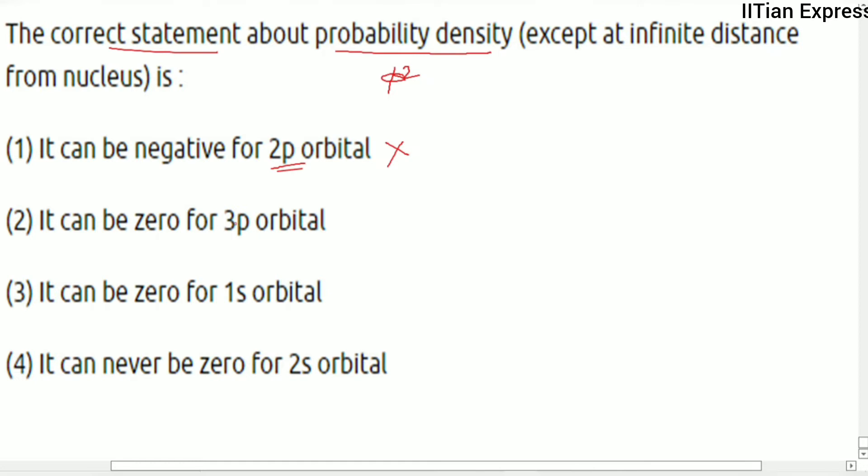be zero for 3p orbitals. Yes, it can be zero for 3p orbital except at infinity distance, as it has one radial node. Option 3 states it can be zero for